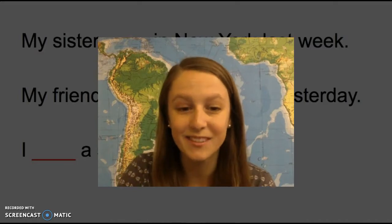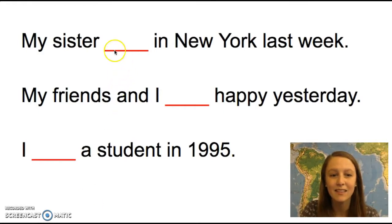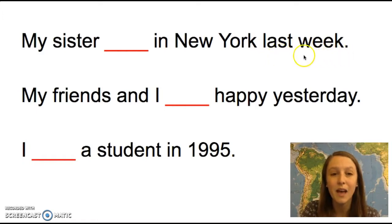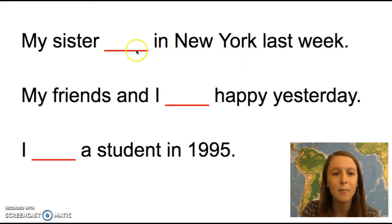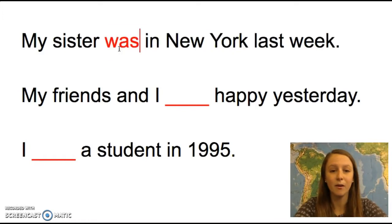Let's look at some examples. Our first example is: my sister ___ in New York last week. We can see that this is a past tense example because we have last week. There's no verb in this sentence, so we will use a be verb. Because the subject is my sister, like she, we can use the be verb was.